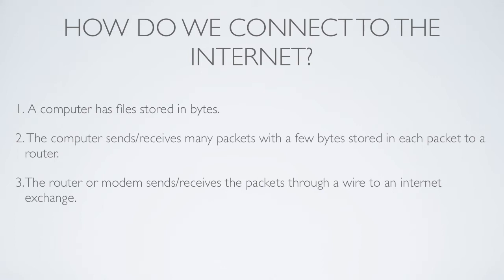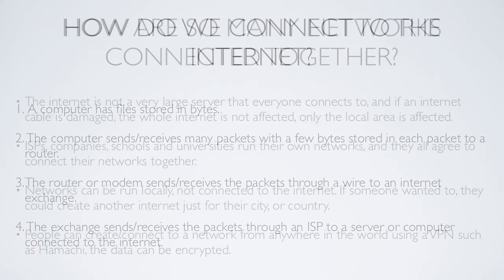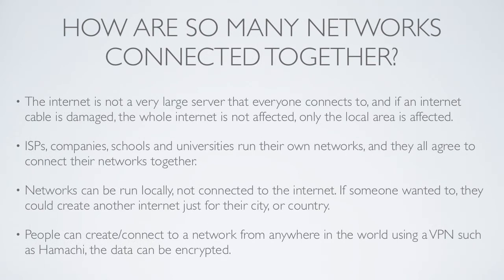At the router, the packets are sent through a wire or cable, and basically someone receives it. The exchange sends these through an ISP. For example, if you're downloading or uploading something to a website, then you're sending or receiving packets from a server. Or if you're talking to someone through an instant message, it's just directly to the other computer — through your ISP and the other person's ISP.